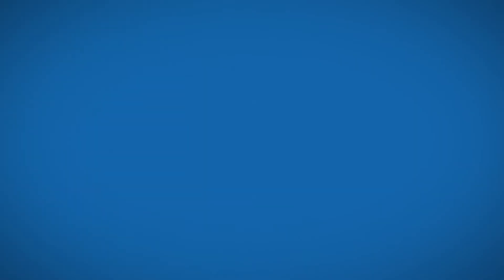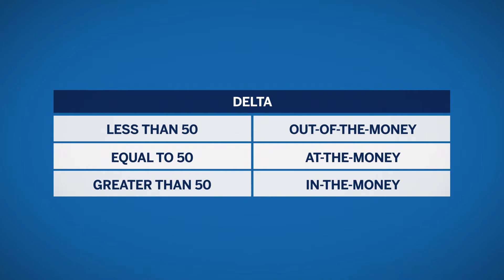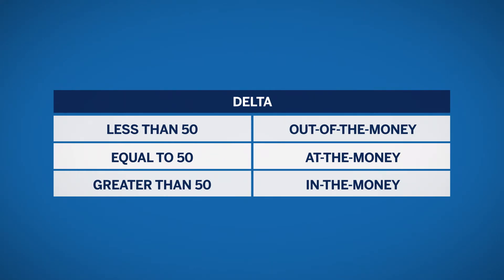If an option delta is less than 50, it is said to be out of the money. If the delta is greater than 50, the option is said to be in the money. If the delta is equal or close to 50, the option is said to be at the money.